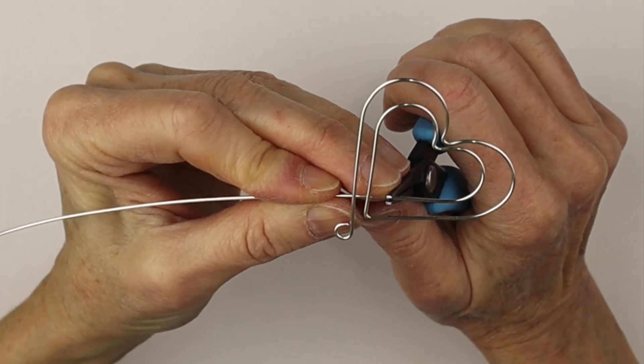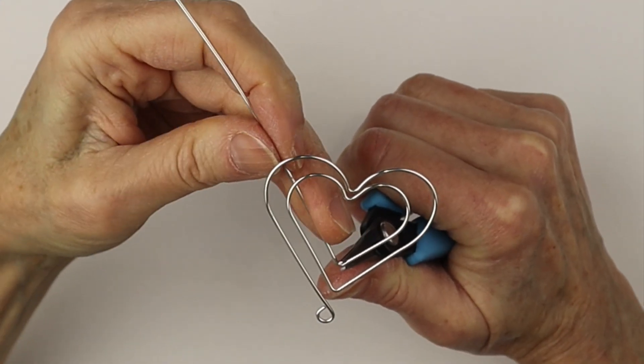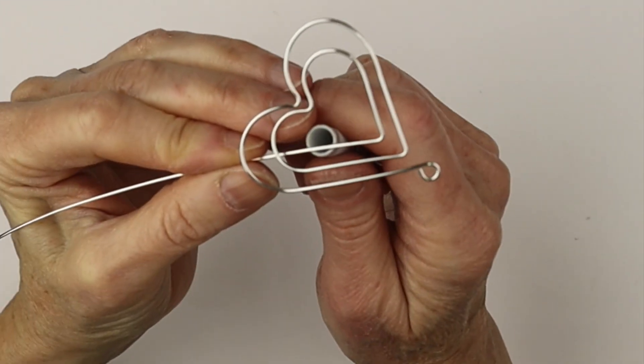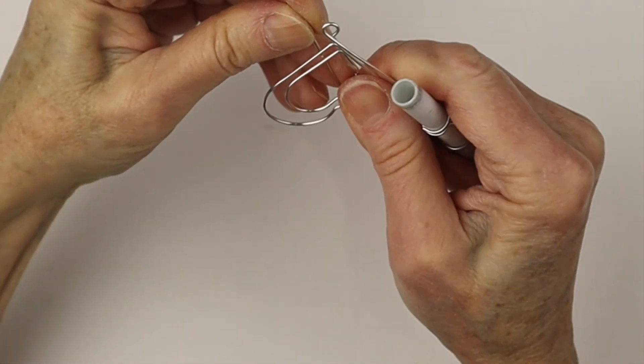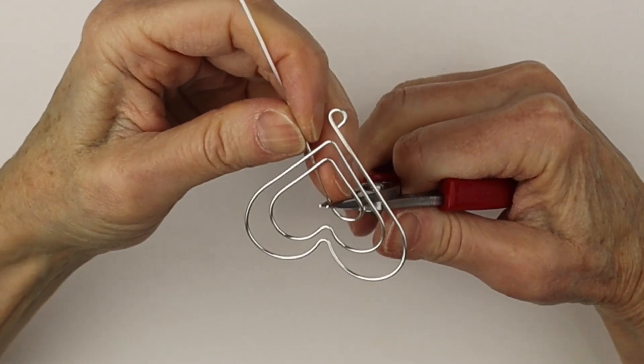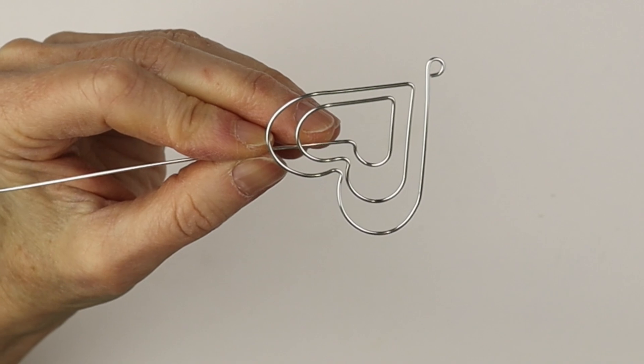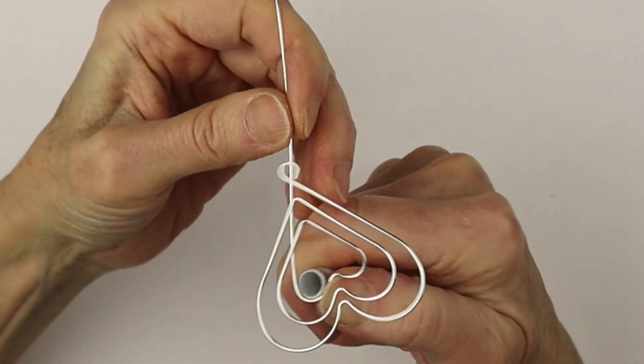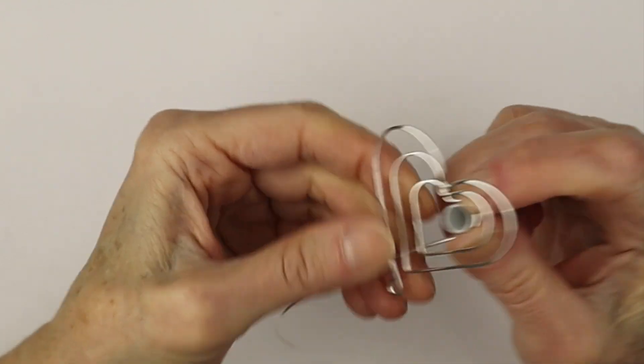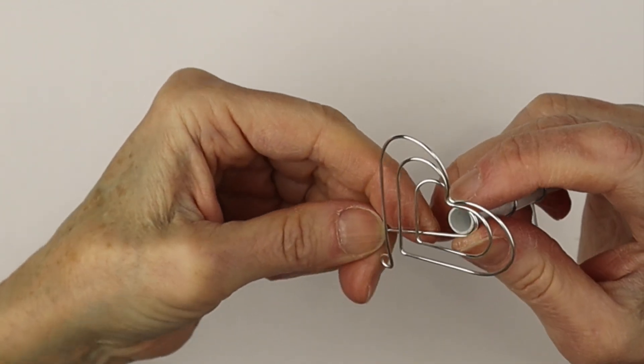So now I have my Xuron tweezer nose pliers. We're going to bend it up on a sharp angle and the end of the pen to make an even smaller heart inside. And the round nose pliers again to bend it up and the end of the pen to bend it back down. So now we have three hearts.